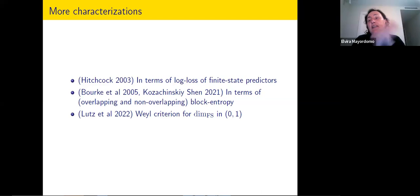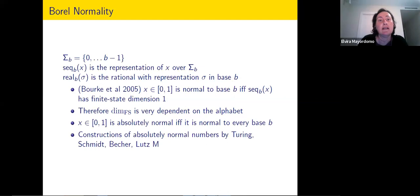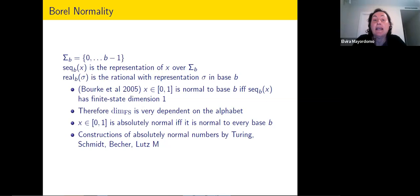There are certain sets of sequences for which this characterization is very interesting, but in general, when you can get the finite state dimension from a single sequence, the characterization is very natural and interesting. Finite state dimension was studied much later than Borel normality, but I think it has contributed to fully grasping exactly what Borel normality means for us.